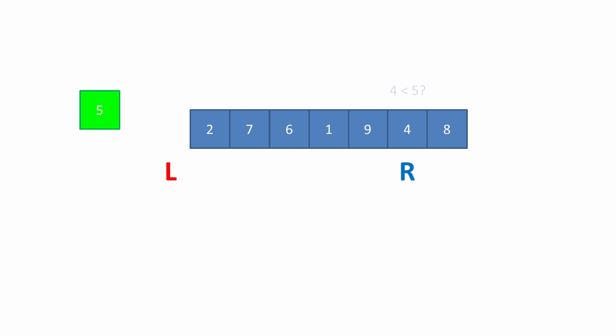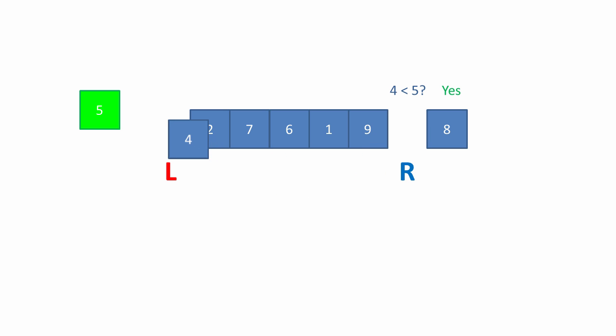Now we ask the question: is the value at the right-hand pointer less than the pivot value? In this case, is four less than five? And because the answer to this question is yes, we're going to move the four to the position given by the left pointer. Because we've just moved something to the left pointer, we can advance the left pointer now.